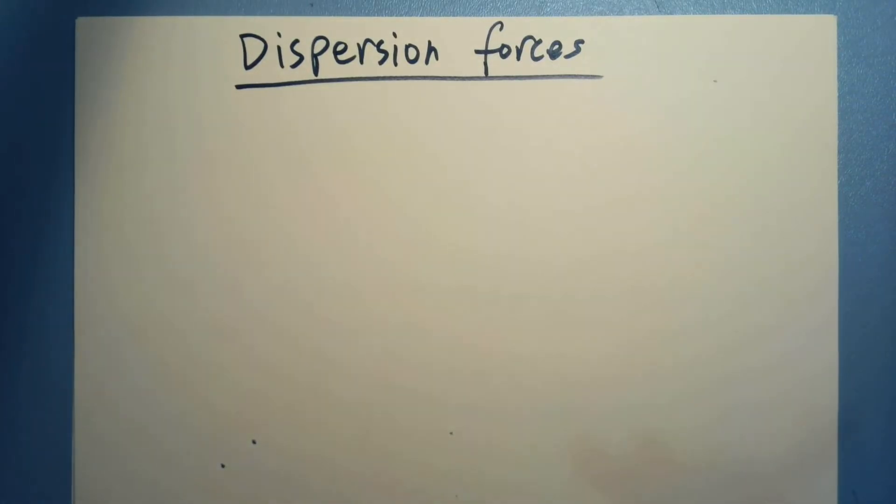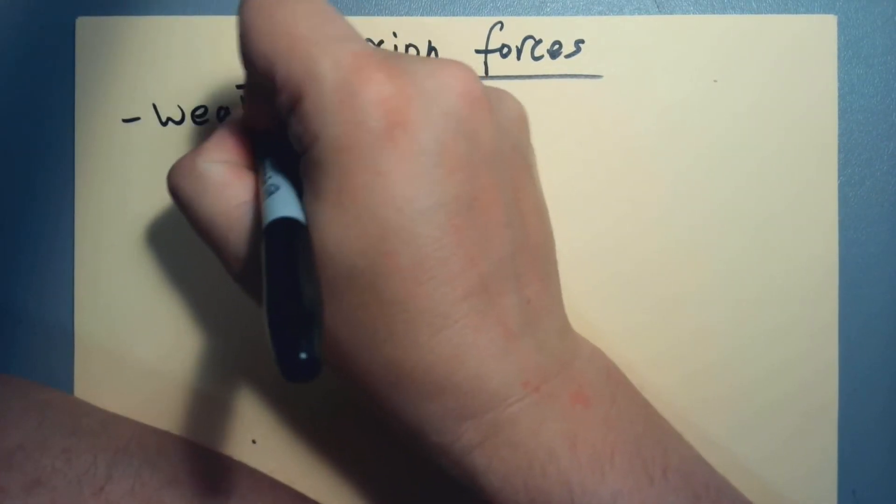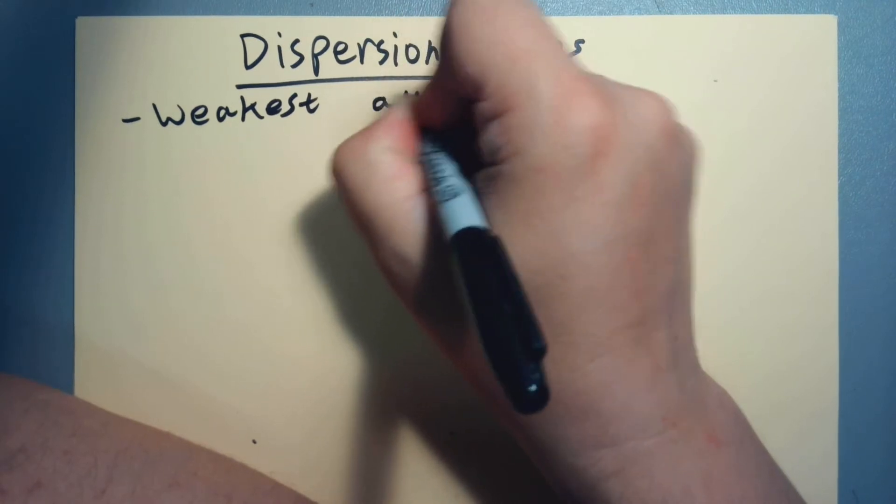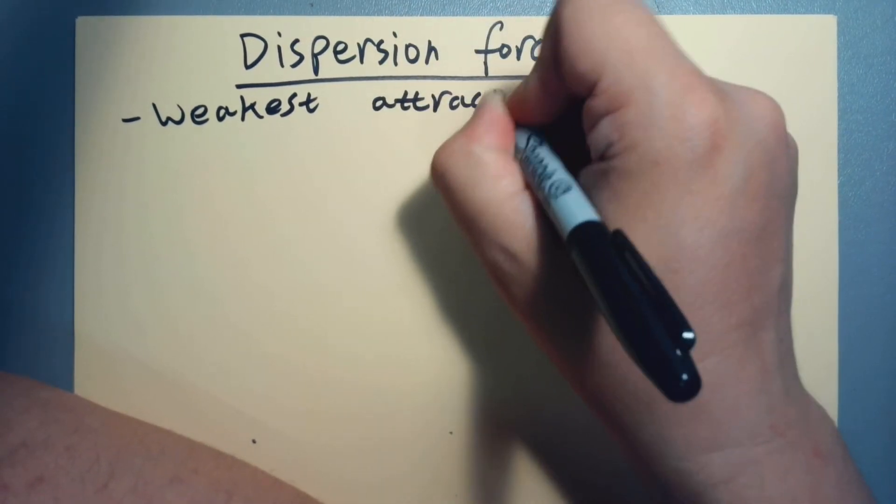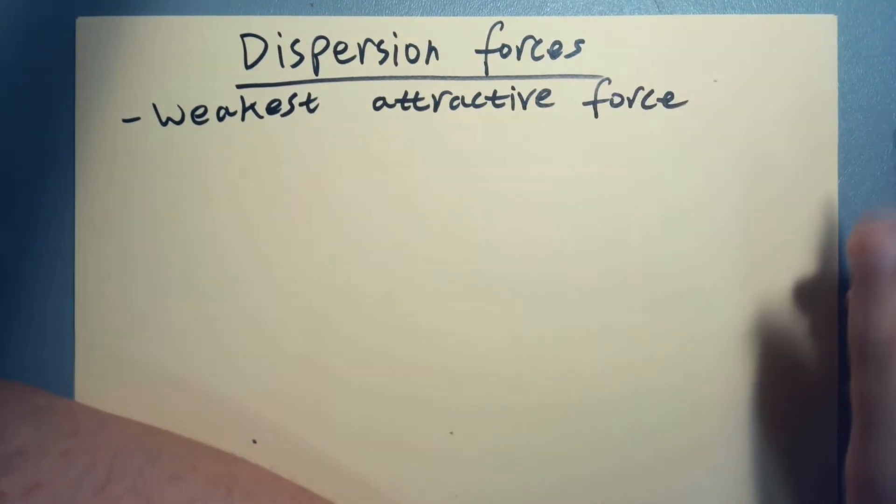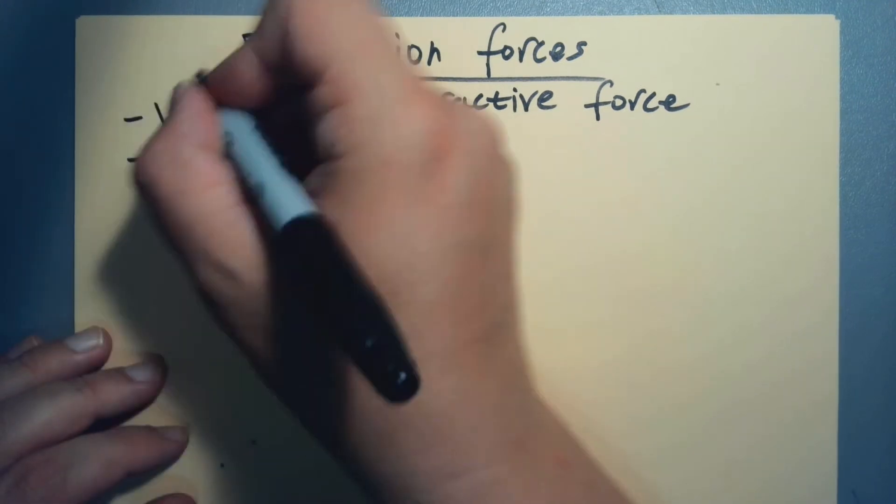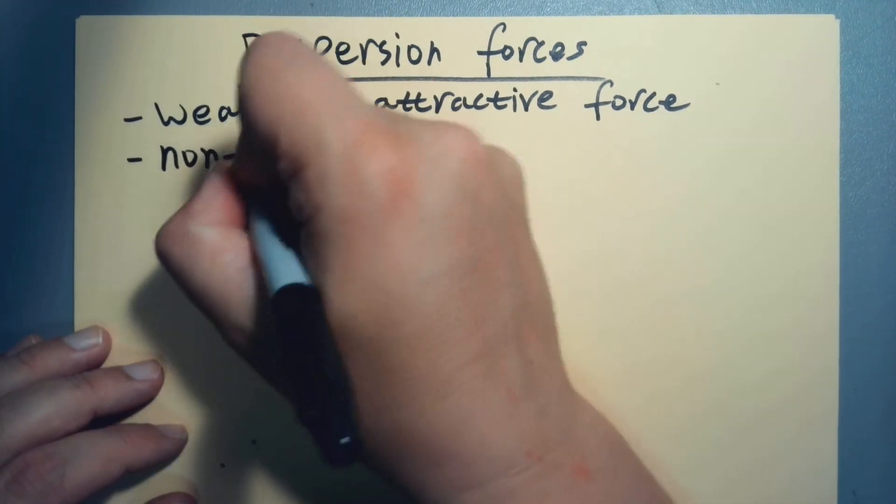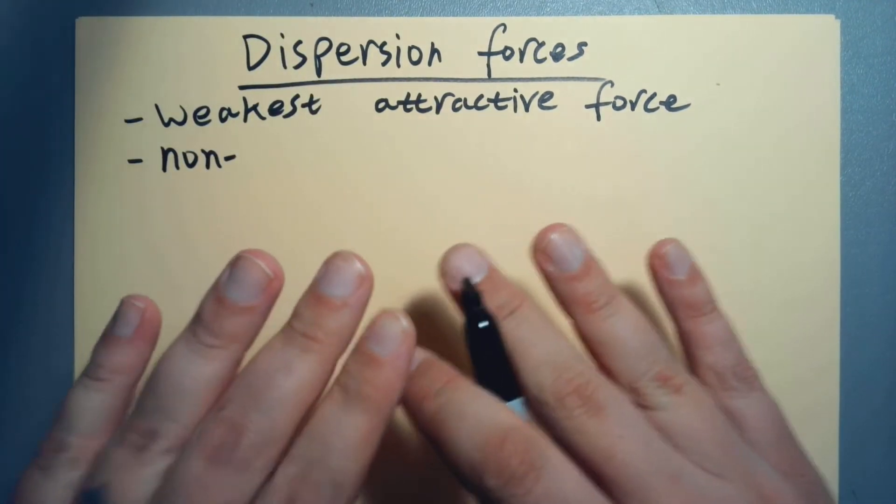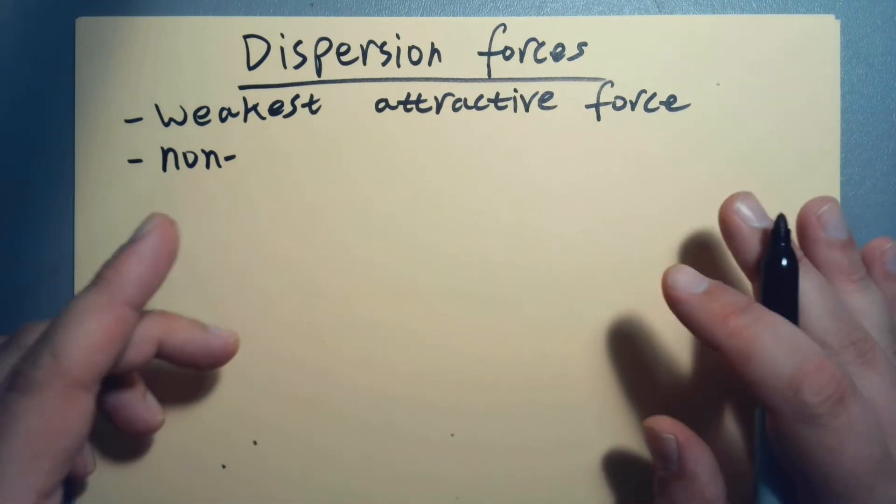Okay, so this is our last type of attractive force. This is the weakest attractive force—these are not strong interactions at all, but you could potentially get a lot of them. It's only going to be relevant in non-polar covalent compounds.